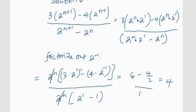After cancelling, we have 3 × 2^1 minus 4 × 2^(-1). Now 2^1 is 2, so 3 × 2 = 6. And 2^(-1) is one-half, so 4 × (1/2) = 2. That gives us 6 - 2 = 4. So the value equals 4. Thank you so much for watching.